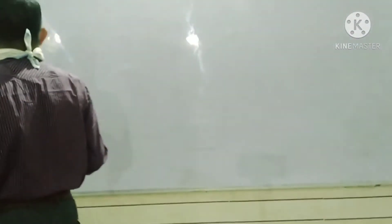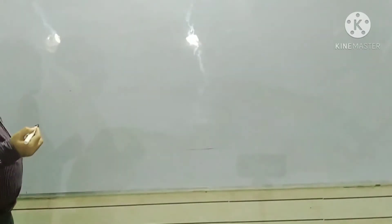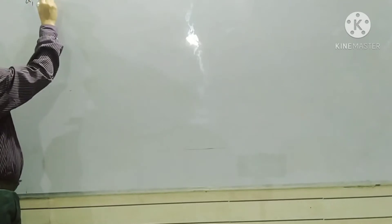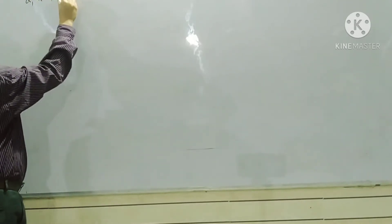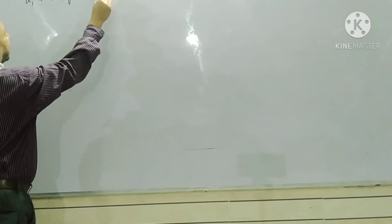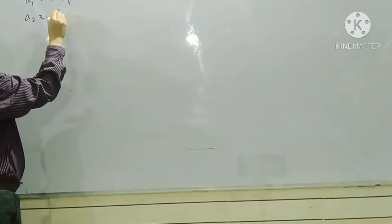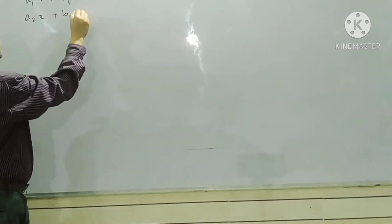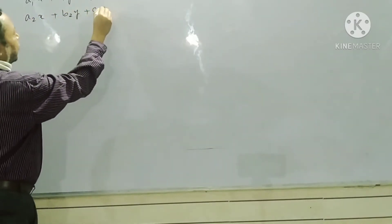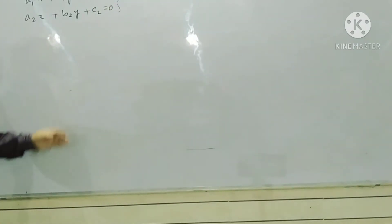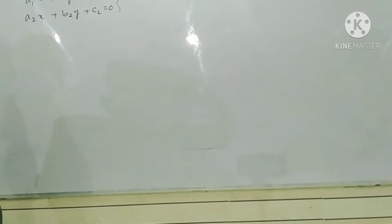Now, if two straight lines are there — A1x plus B1y plus C1 is equal to 0, and A2x plus B2y plus C2 is equal to 0 — they are in general form.